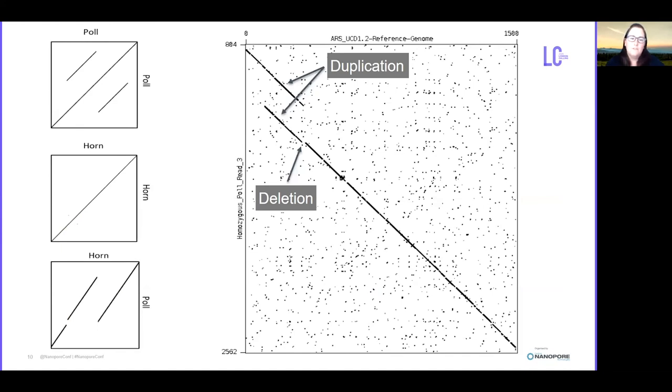And based on the structure of this copy number variant there are different scenarios for what we would expect if we compare two horned or two polled reads. And what we see when we actually align the raw nanopore reads to the reference database is that compared to the reference genome of cattle, you can see that the polled alleles display this duplication, and you can even see the very small deletion there in the dot plot, giving us very strong direct evidence that this is the Celtic allele that is segregating in this population.